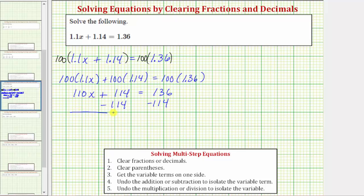Now we simplify both sides. Subtracting 114 undoes plus 114, or 114 minus 114 is zero. So we have 110x on the left. On the right, we have 136 minus 114, which equals 22.